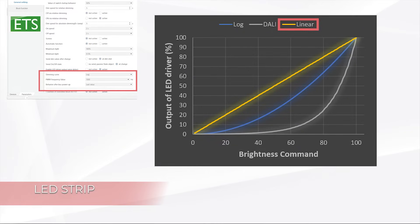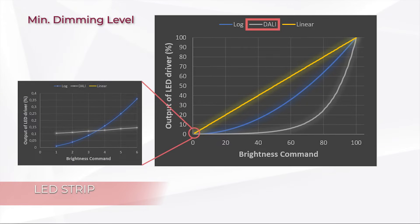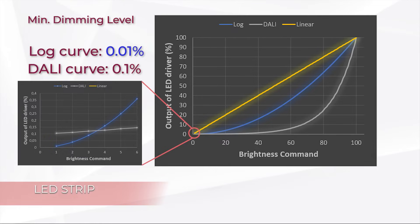The linear curve gives the driver output the same as the command sent from the push button. The DALI curve is based on a formula specified in the DALI standard, which gives the user an outstanding dimming experience, because the light difference between steps is designed to be constant and the minimal dimming level is 0.1% according to the standard. The LOG curve gives a logarithmic response, with a minimal output of only 0.01%, which opens the possibility for applications where low luminescence is needed. The user is free to select one of these three curves to achieve the best result.